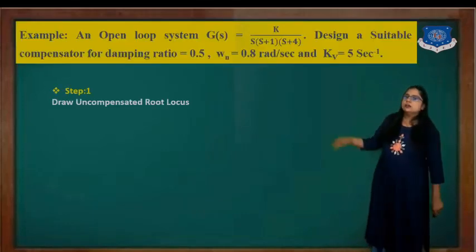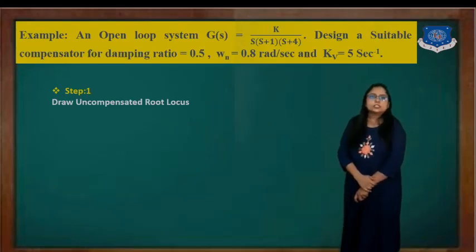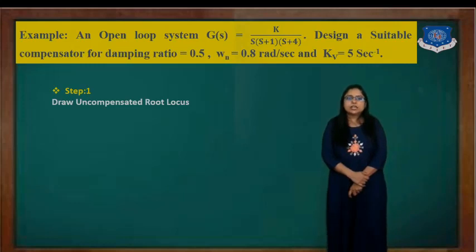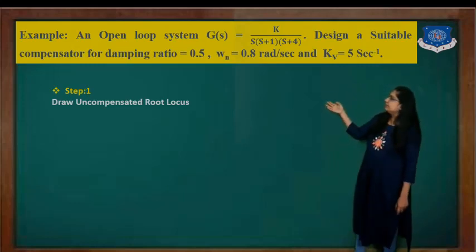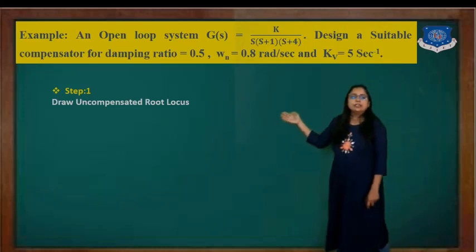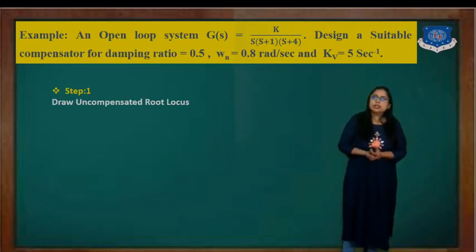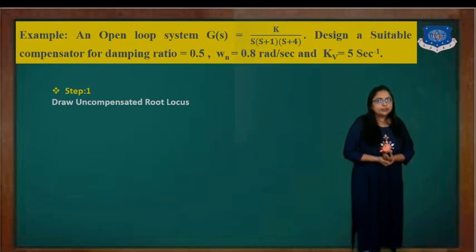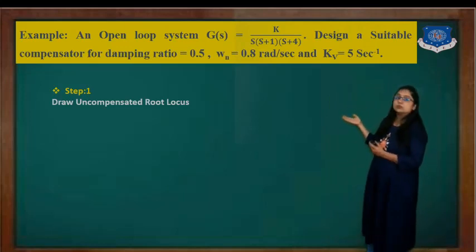The question is: it is an open loop system, G(S) that is equal to K upon S(S+1)(S+4). Now design a suitable compensator for the damping ratio zeta equal to 0.5, omega_n equal to 0.8 radian per second, and here the value of K will be given to us.